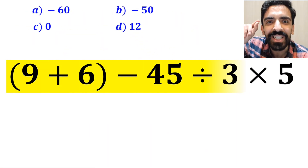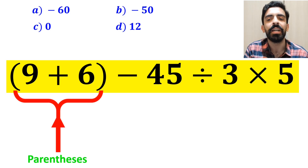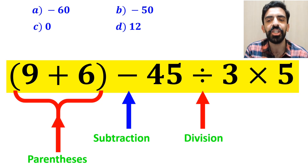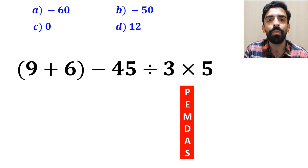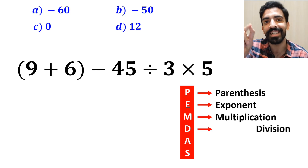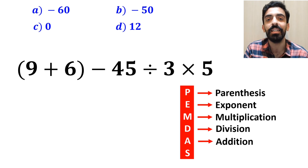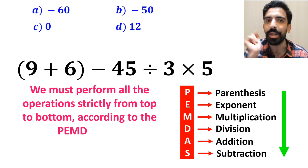Now let me show you how to solve this expression properly. As you can see on the screen, this expression has a parenthesis, then a subtraction sign, followed by a division, and finally a multiplication. To solve this question, we need to follow the PEMDAS rule step by step: P stands for parenthesis, E for exponent, M for multiplication, D for division, A for addition, and S for subtraction. We must perform all operations strictly from top to bottom according to the PEMDAS rule.